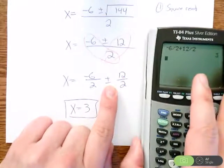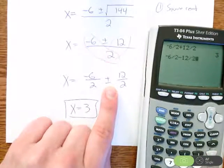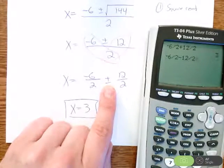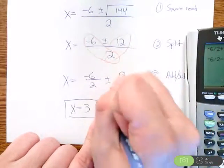And now I'm going to do it again, but this time with subtraction. So negative 6 divided by 2, minus 12 divided by 2. So I switch it instead of addition to subtraction, hit enter, and I get x equals negative 9.